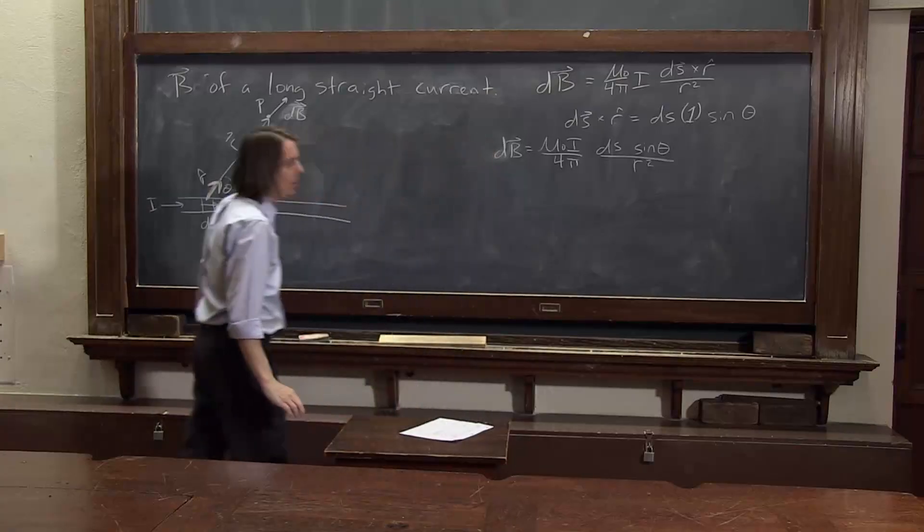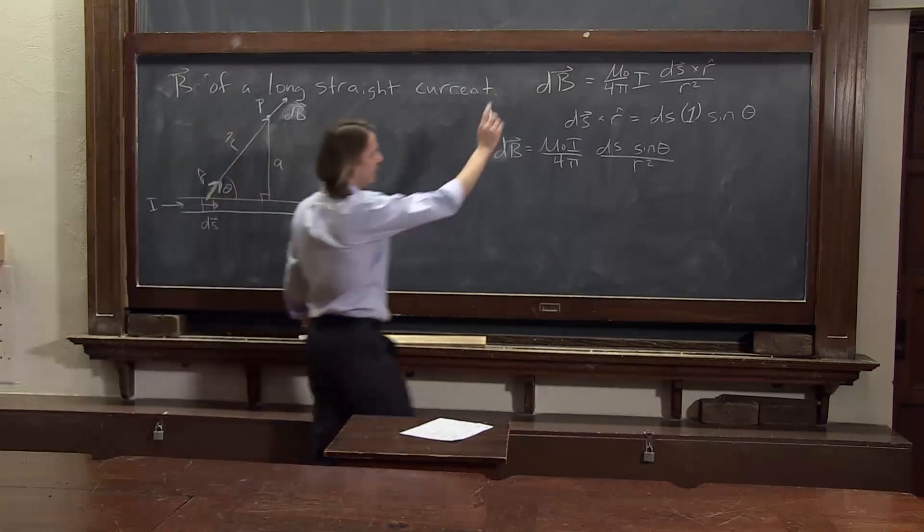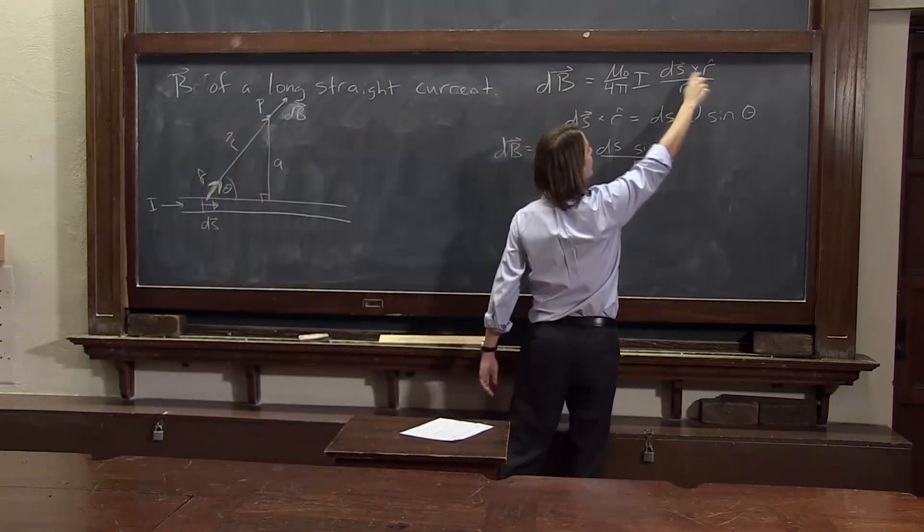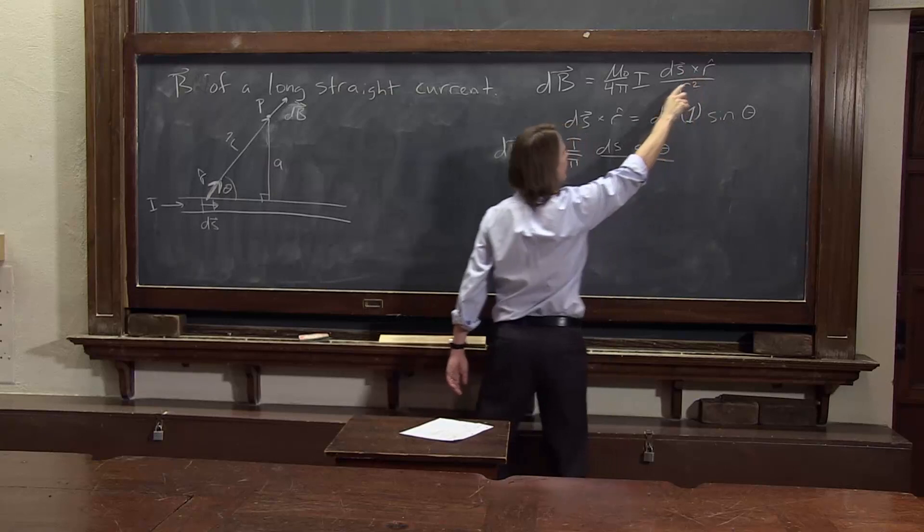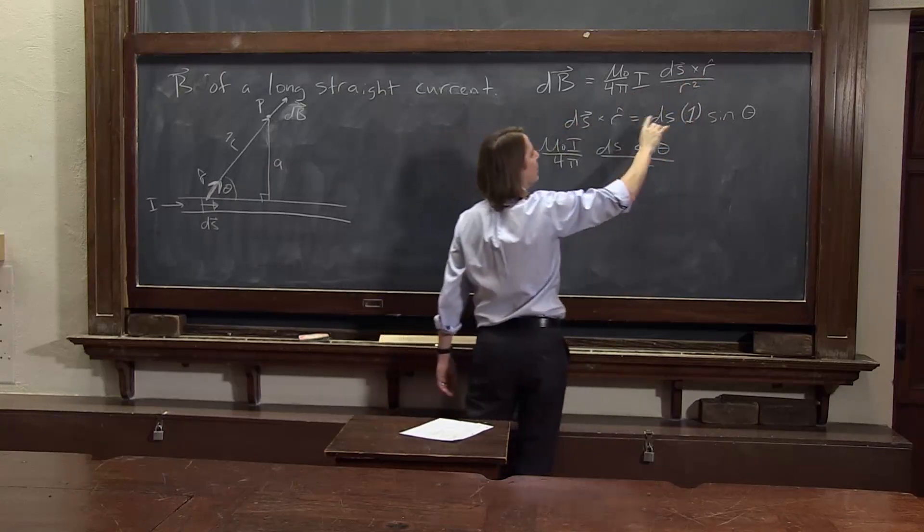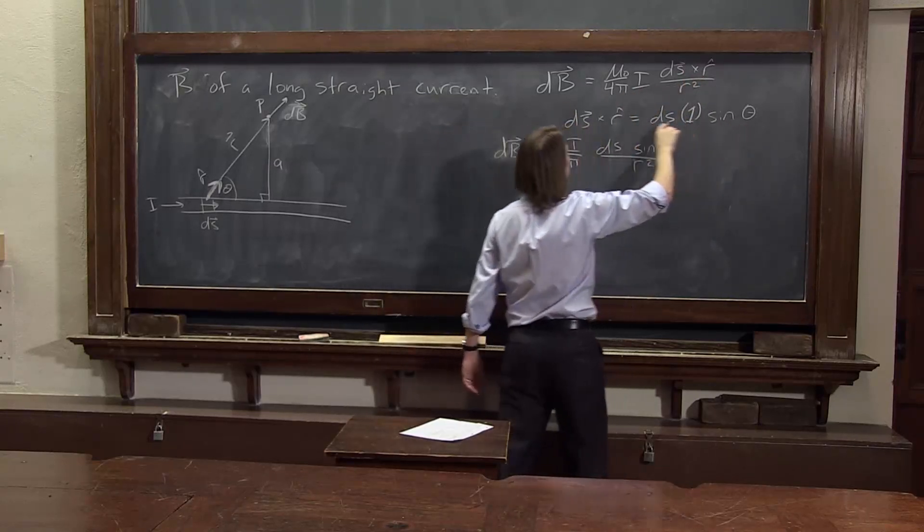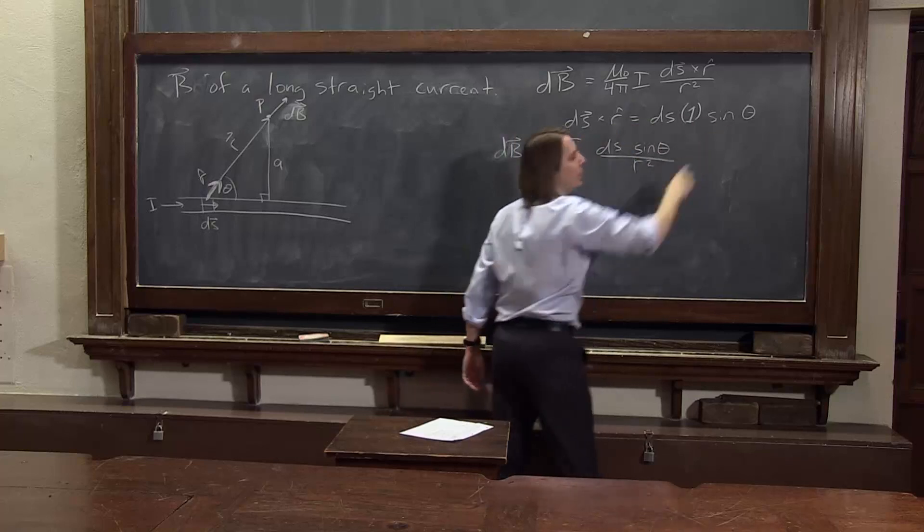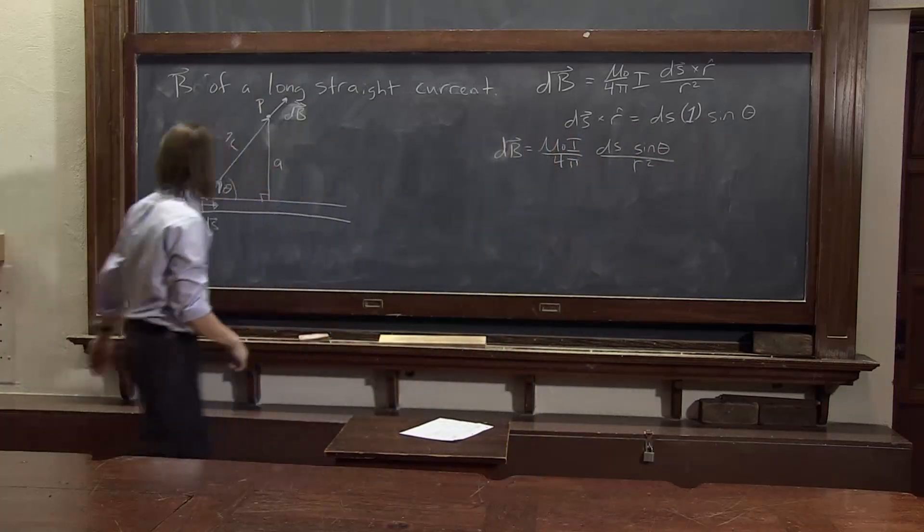And now we need a direction. This is a vector, and this clearly is a vector with some direction. It's a cross product. Now, this is a vector, but this is really just the magnitude of ds cross r̂. We don't have the vector part. So to do this problem, you almost always want to set up a coordinate system.